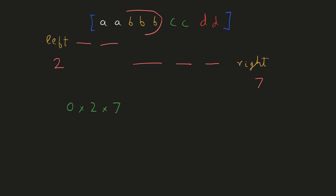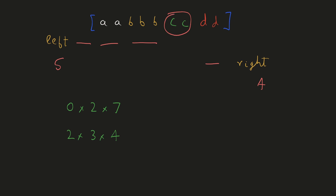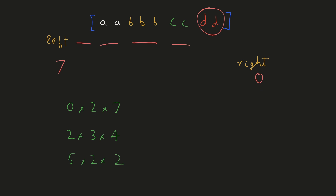When we consider B to be the middle element, we reduce right by the frequency of B. The count of such triplets would be left × frequency(B) × right, and then we increment left by the frequency of B. Similarly, when we consider C to be the middle element, we reduce right by 2, and the number of such triplets would be left × frequency(C) × right. After that, we add 2 to our left. When we consider D to be the middle element, right becomes 0, and the number of such triplets would be left × frequency(D) × right. We add all of them to get our answer.